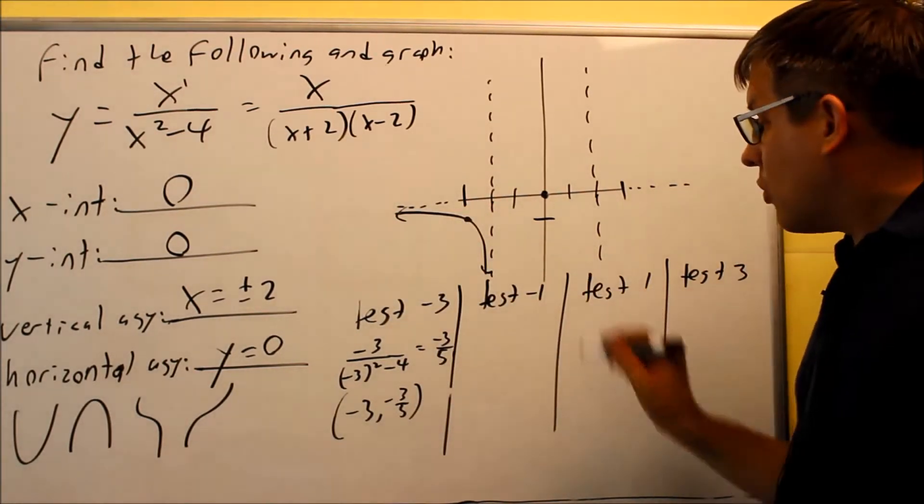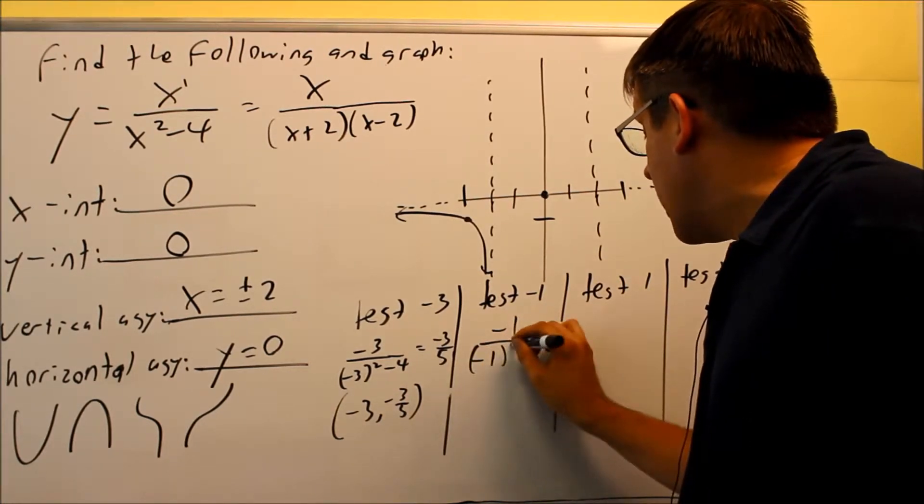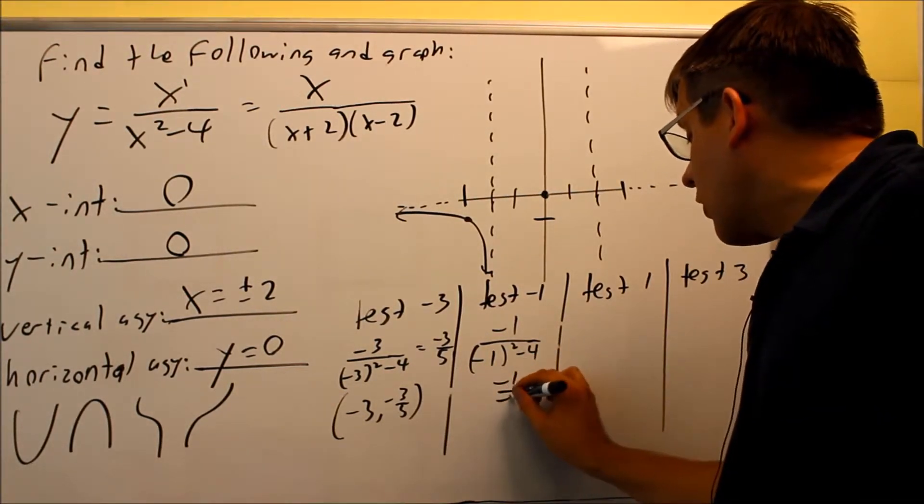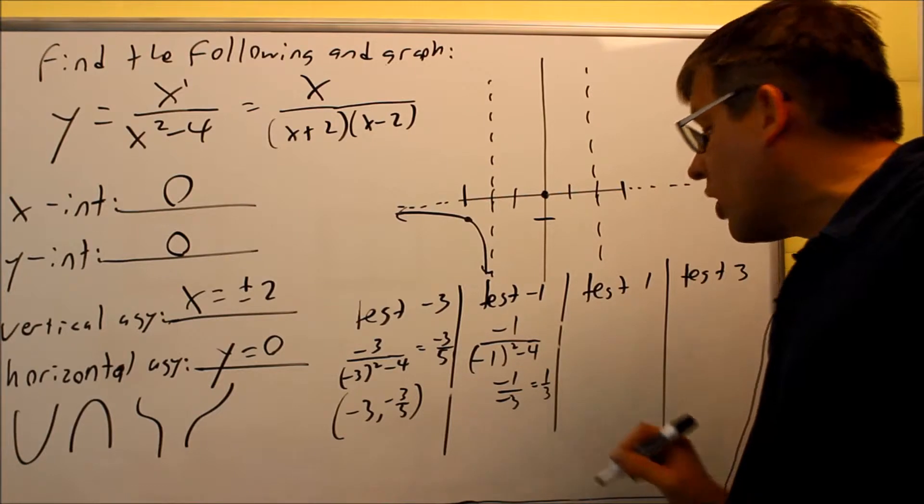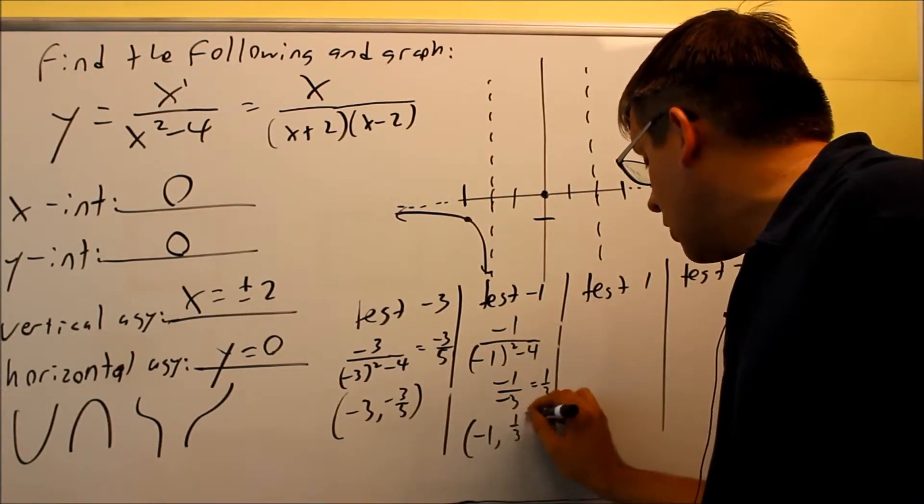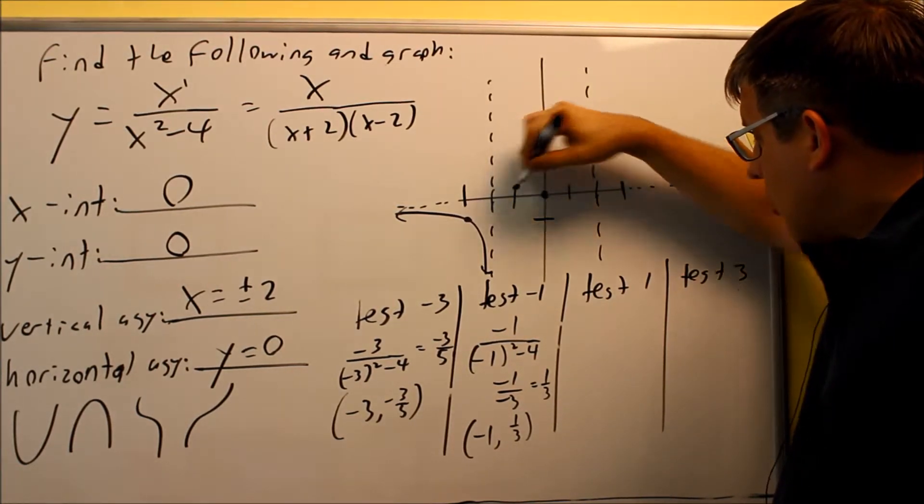Next, I want to test x is equal to negative 1. Negative 1 over negative 1 squared minus 4, we get negative 1 over negative 3, which equals 1 third. Written as a coordinate, that would be negative 1 and 1 third. Negative 1 and 1 third would be about right here.